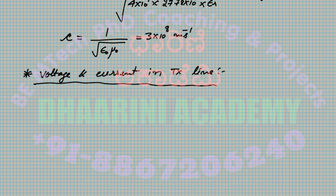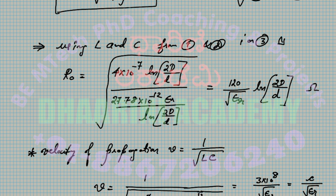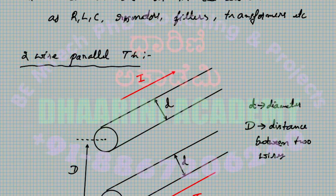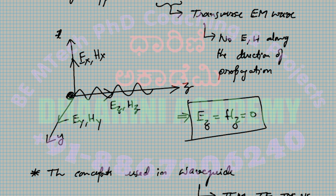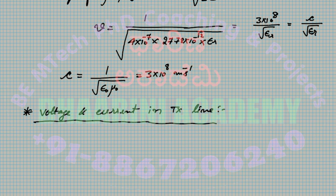Consider a very small length of the line. We represent the line along the z-axis because the wave is assumed to propagate along z — meaning there should be no electric or magnetic field components along that direction. This is the TEM assumption.